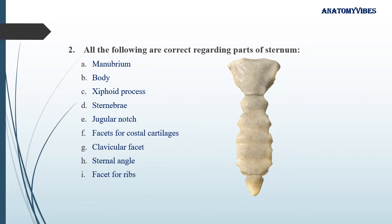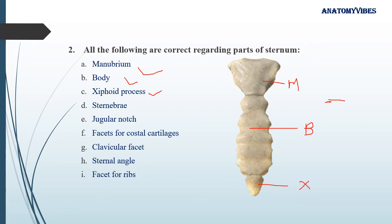The next question: all the following are correct regarding parts of sternum. The sternum is divided into three main parts: the manubrium, the body, and the xiphoid process. Embryologically, the body is made up of four independent cartilaginous parts called asternebrae, which finally become bone and form the body of the sternum.